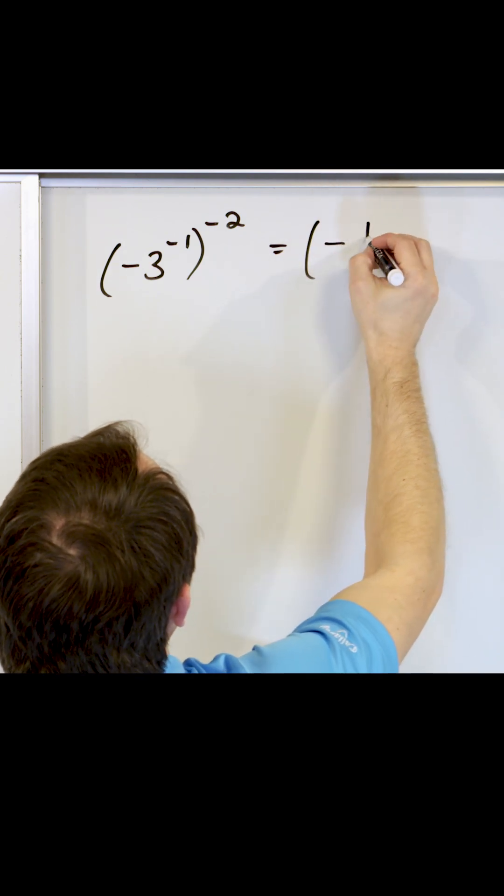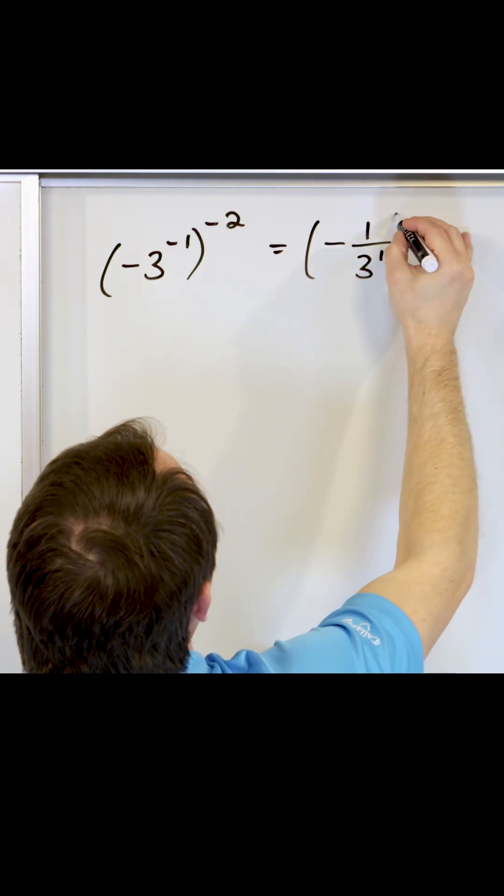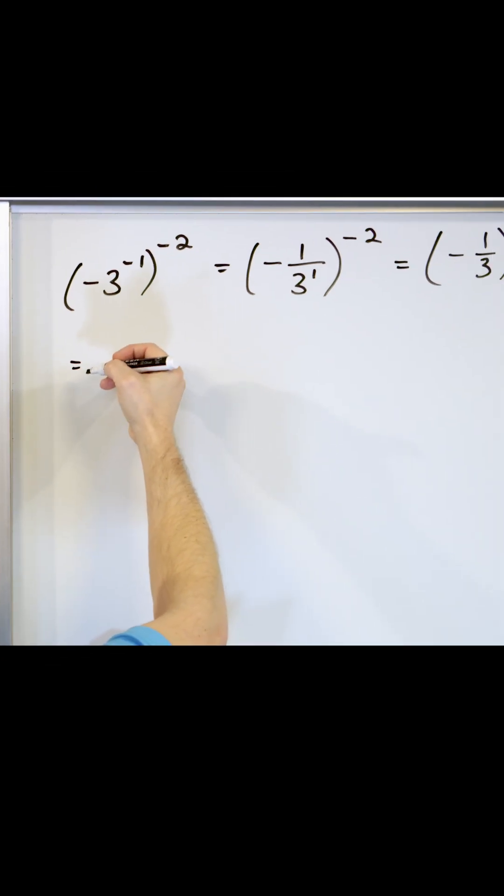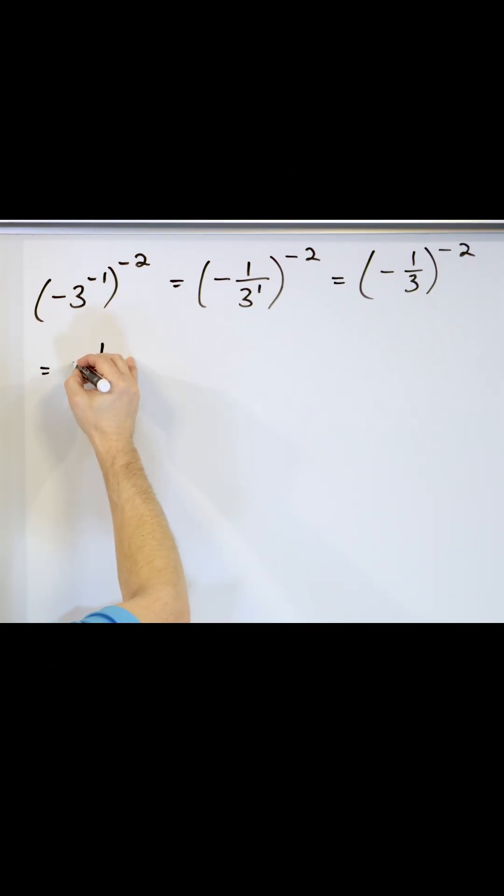So what you really have on the inside is negative one over three to the first power, which is one third. What you'll have is one over this entire quantity, negative one third, raised to the power of two.